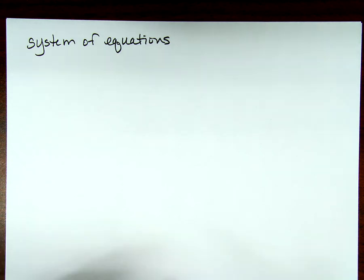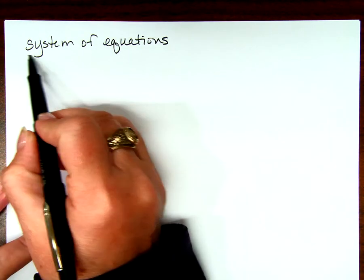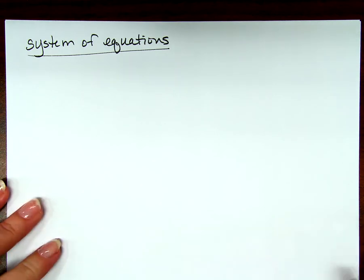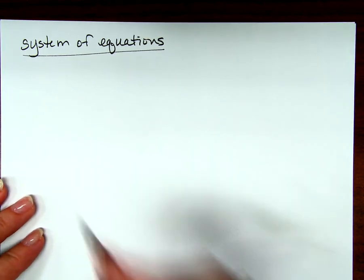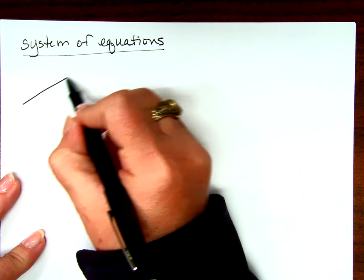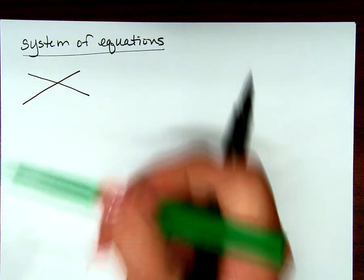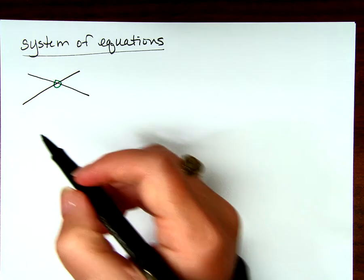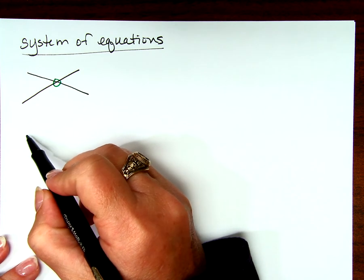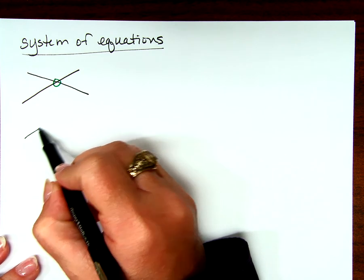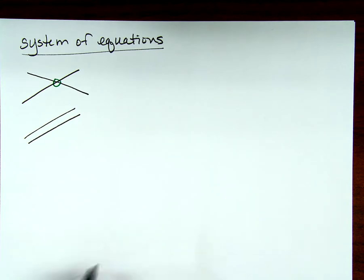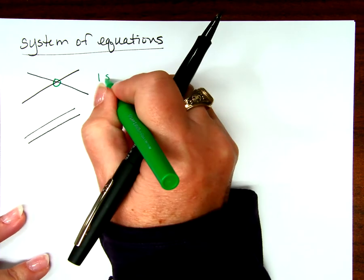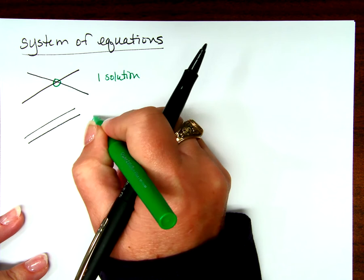Where do you look for the solution of a system of equations? Where they cross, right? So when we talked about systems of linear equations before, we talked about two lines that crossed here, or what else was a possibility? Parallel, right? So this one had one solution, and this had no solutions.